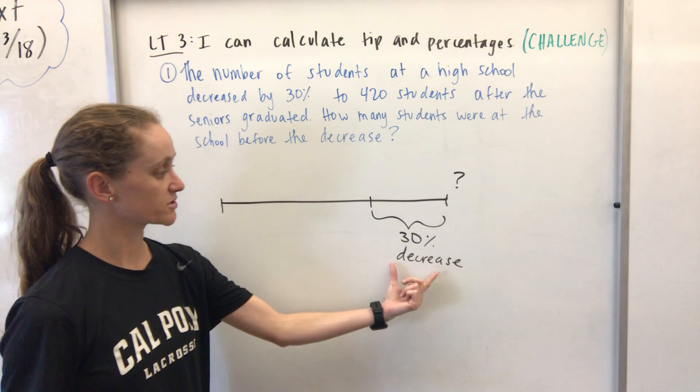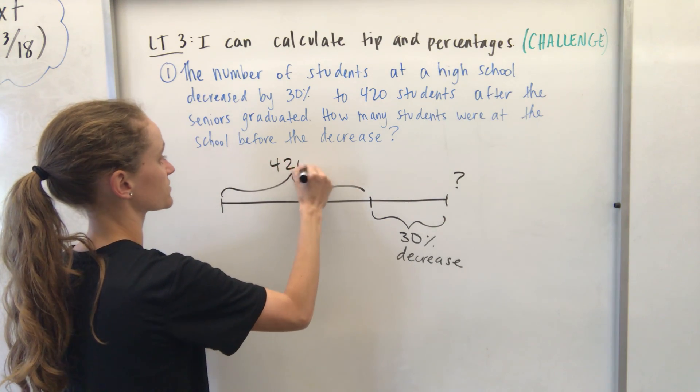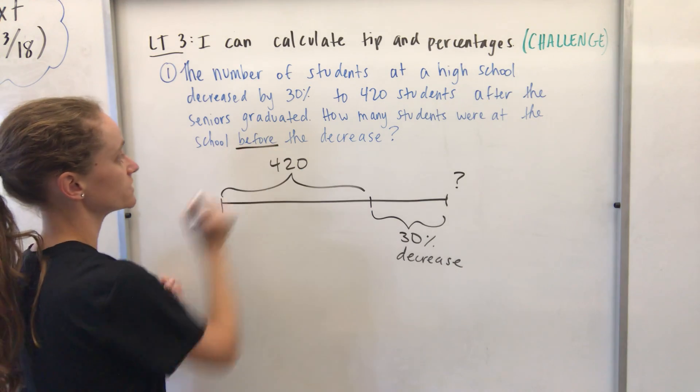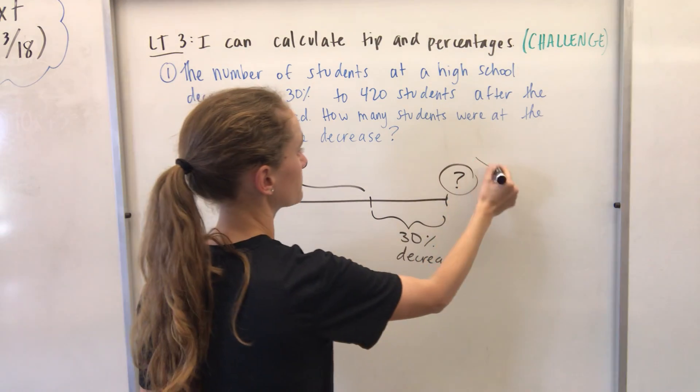And after the 30% decrease, there were 420 students at the school. And so it's asking how many students were at the school before the decrease, which means we're trying to solve for this number. And I'm just going to call it X because we don't know what it is right now.